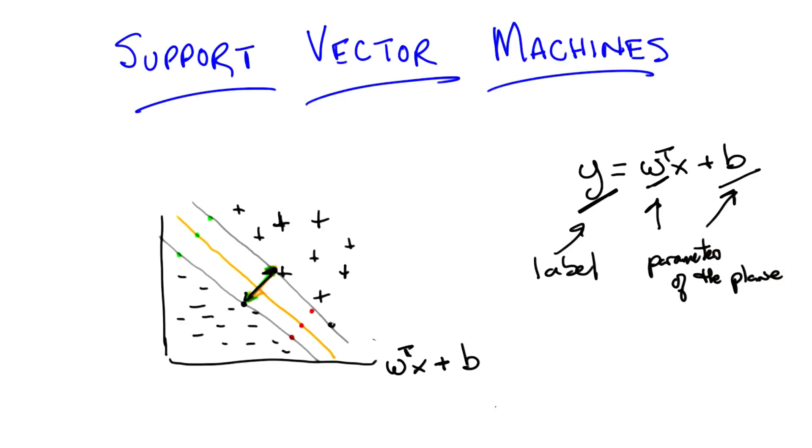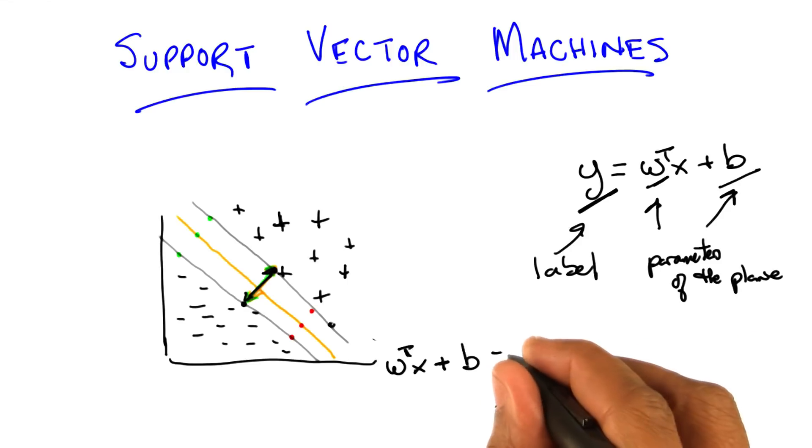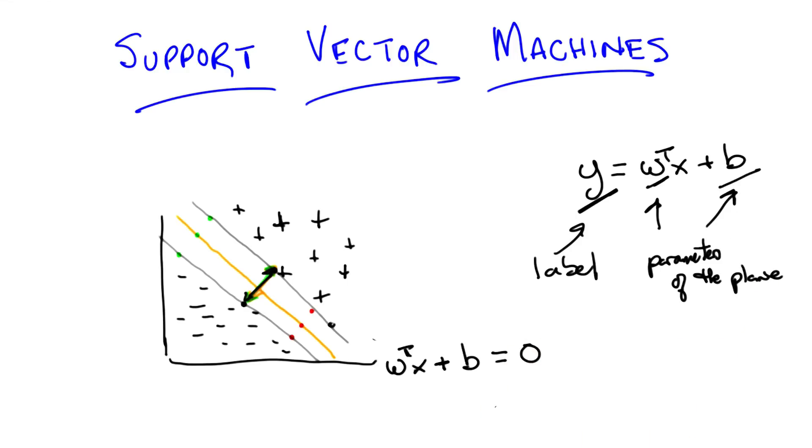Ah, so right. If that's the decision boundary, that's where it's kind of not sure if it's positive or negative, so that should be zero. Right. So the equation of this line, or this hyperplane, is W transpose X plus B equals zero. For some set of parameters W and B, we don't yet know what they are. But we do know that this is the definition of a hyperplane, and since it's at the decision boundary, it should give neither a positive nor a negative output.